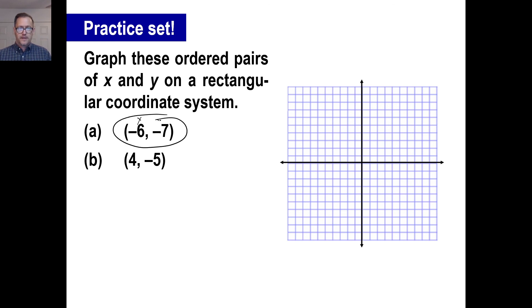Okay. A and B, there's my X, there's my Y. So one, two, three, four, five, six, negative six. Okay. Cause that's the X axis. Then one, two, three, four, five, six, seven, all the way down here. That's negative six, negative seven.